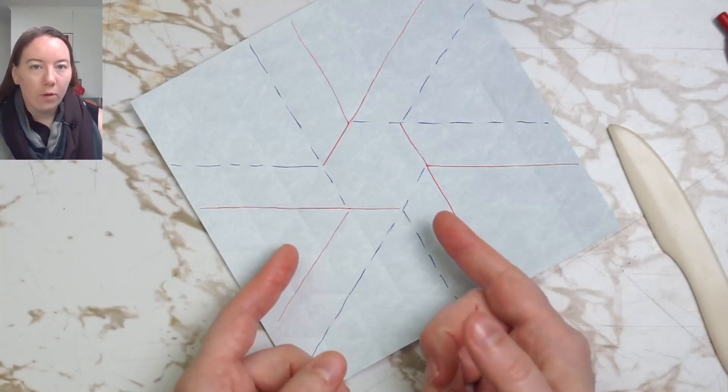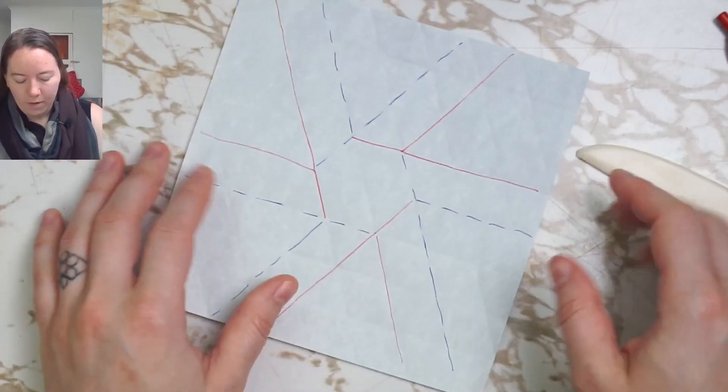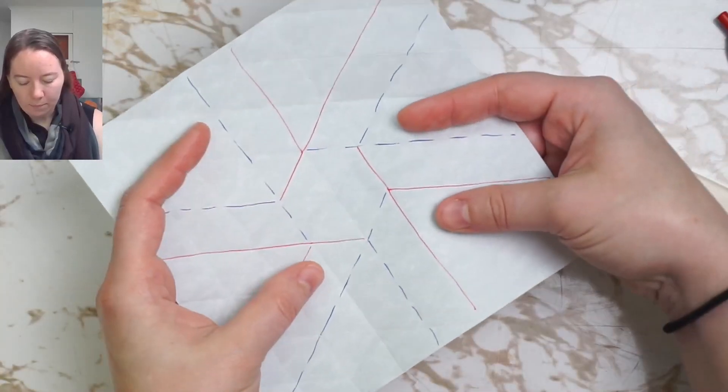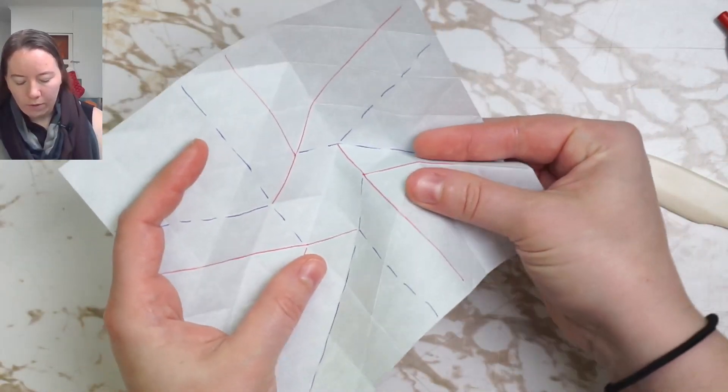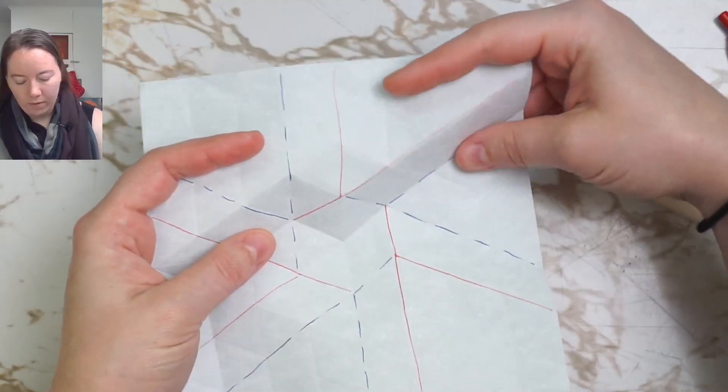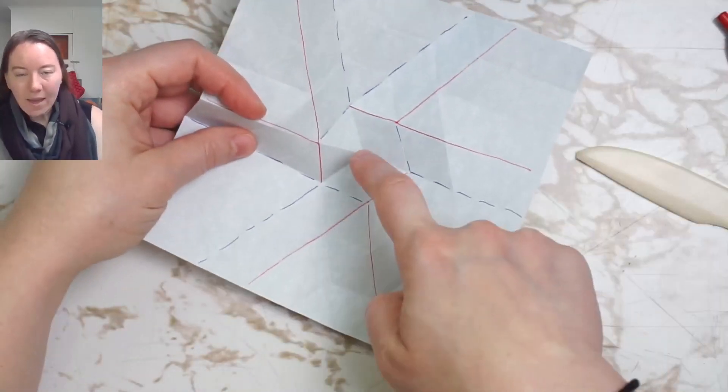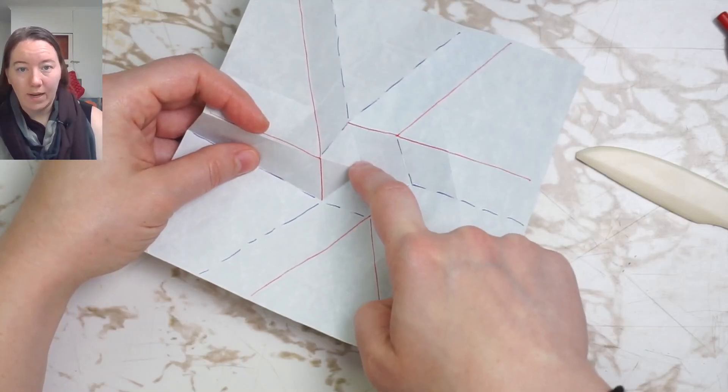And then in order to fold this twist, because seeing the crease pattern is only halfway to getting there, we're going to start emphasizing the mountains and valleys of the pleats, making sure that the central point of the grid is down.